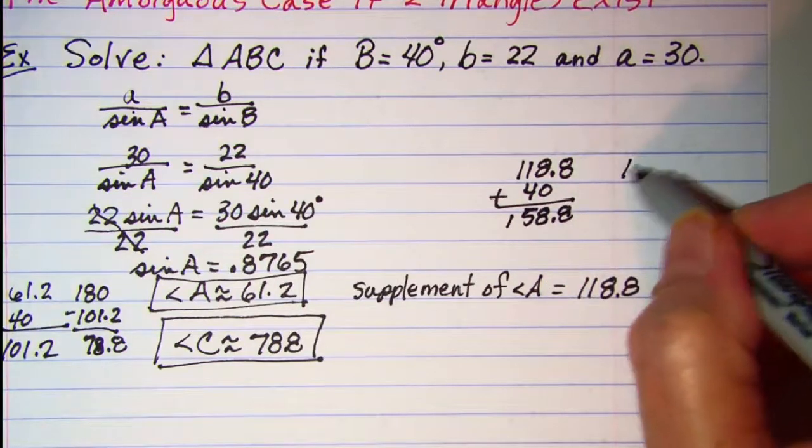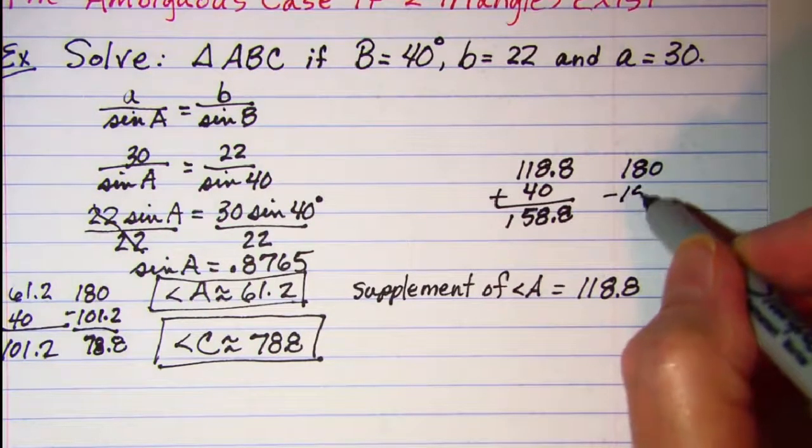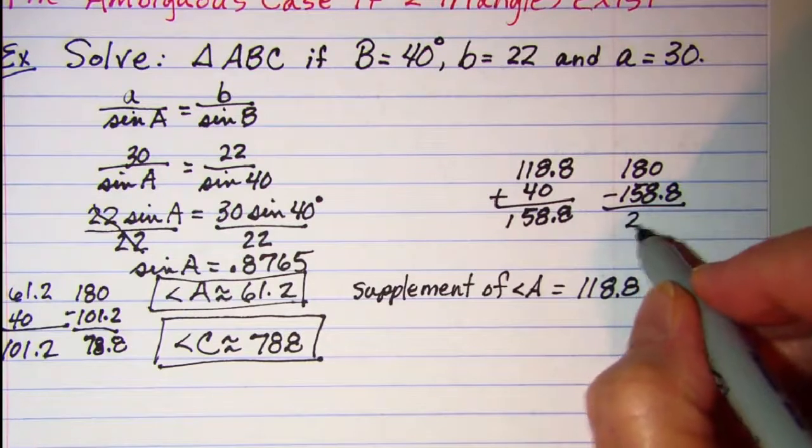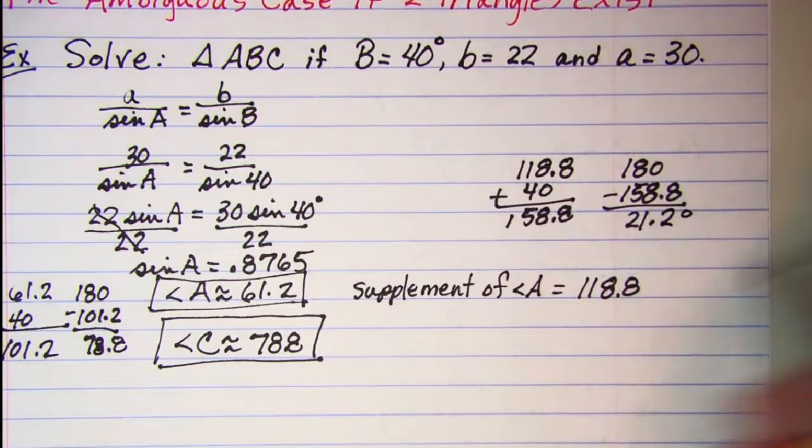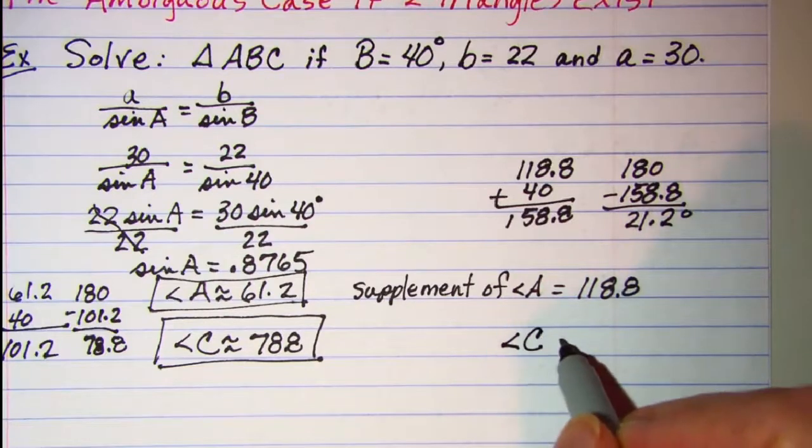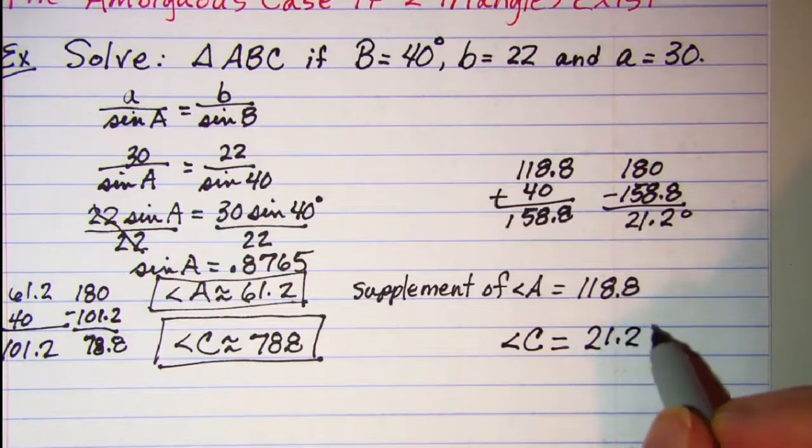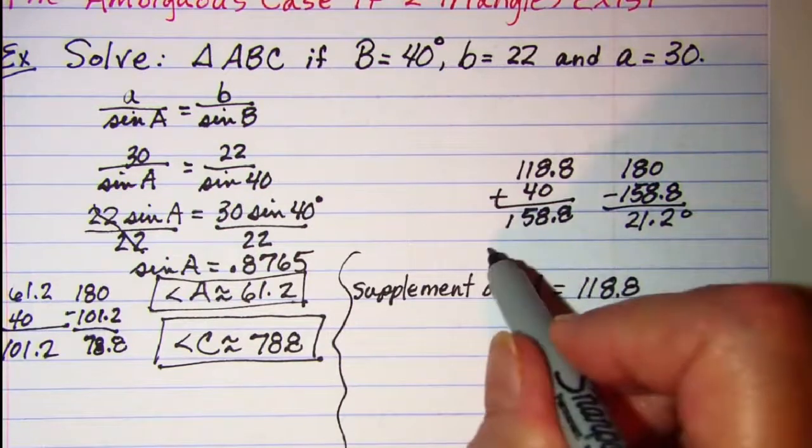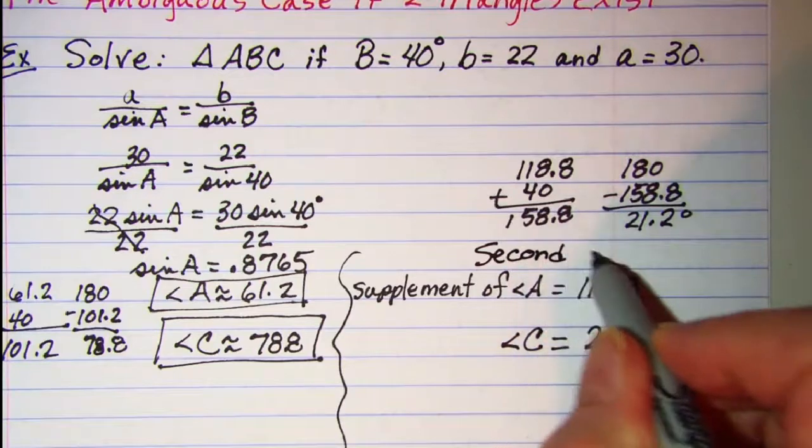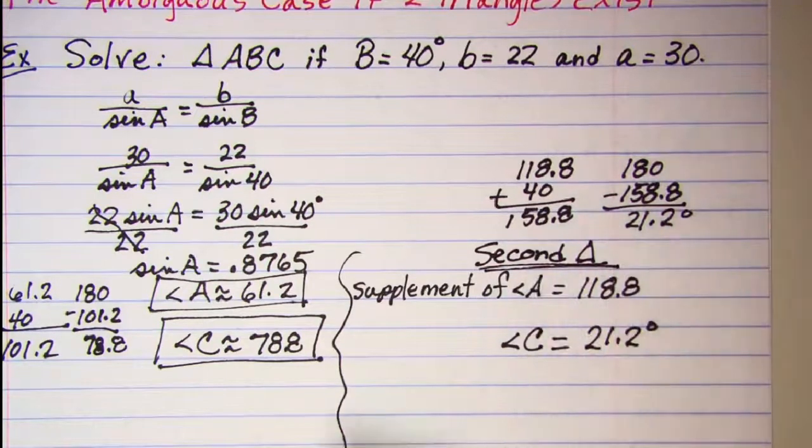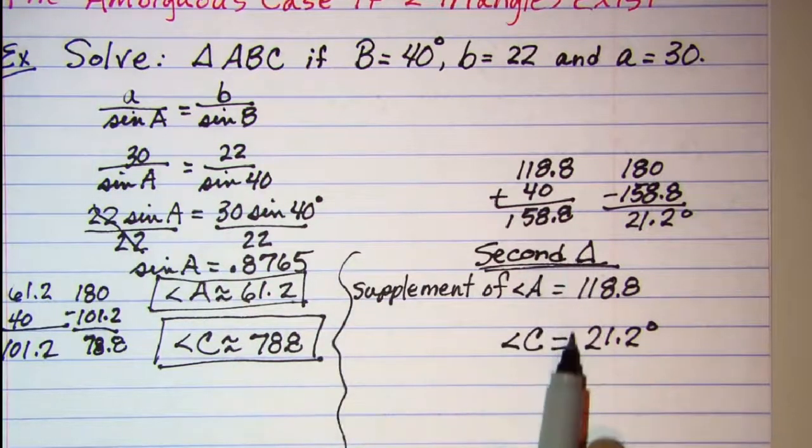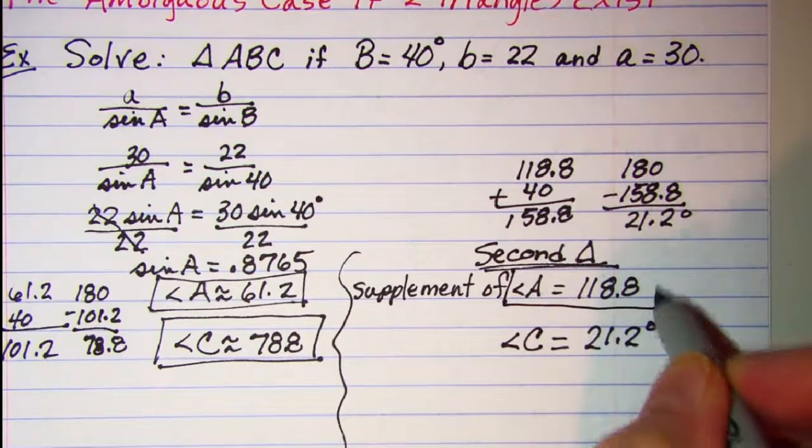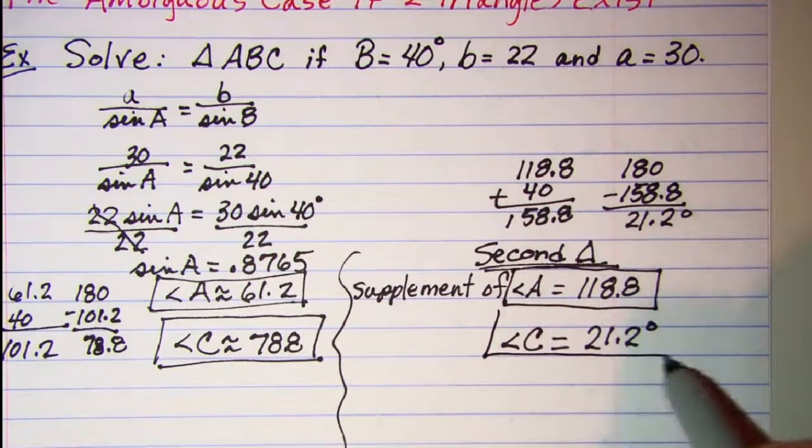We'll subtract from 180 and we get 21.2, so angle C could also be 21.2. So this is our second triangle. So here we have our first triangle information and here we have our second triangle information. Angle A could be 118.8 and angle C could be 21.2.